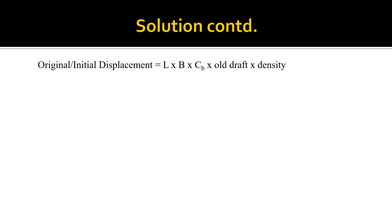Let's work out our original or initial displacement using: length × breadth × CB × old draft × density. Substituting the values: 108 × 38 × 0.7 × 4.07 × 1 = 11,692.3 tons.